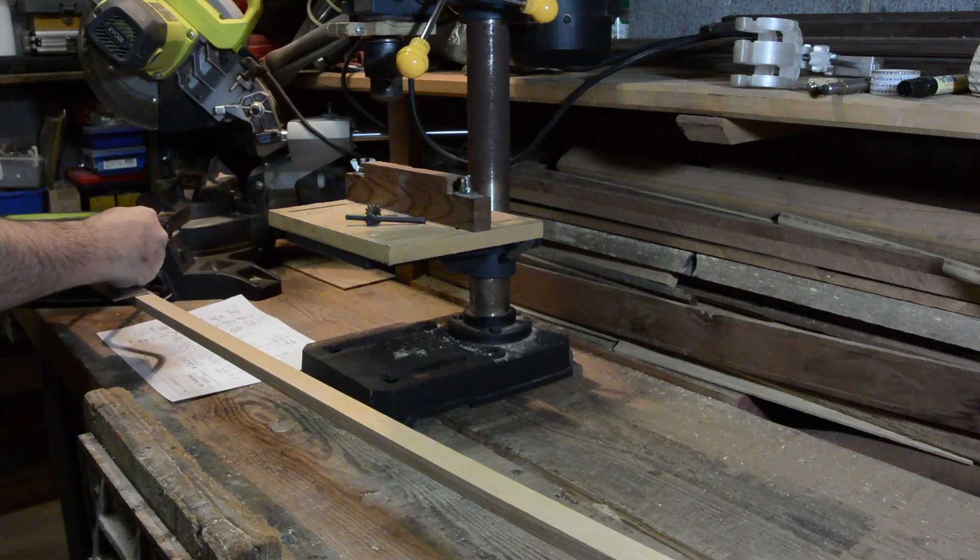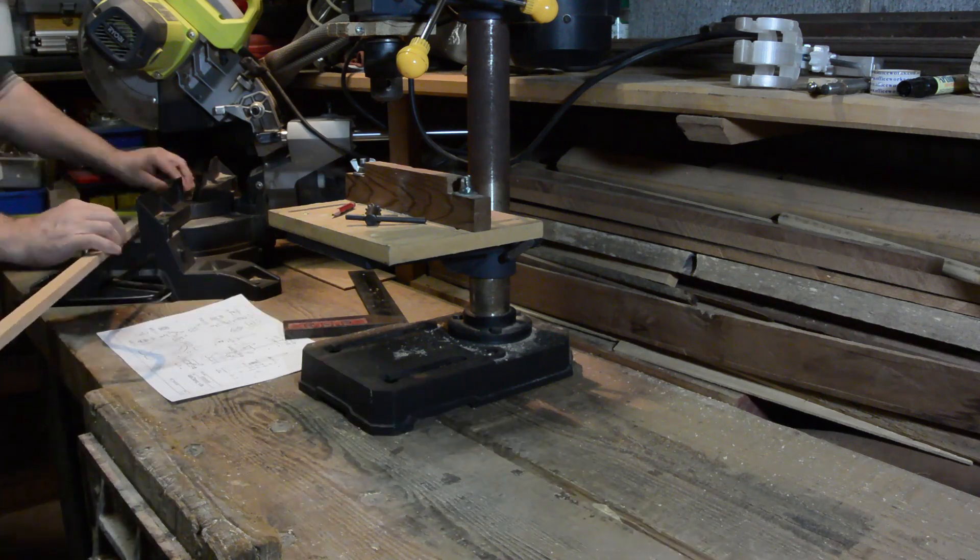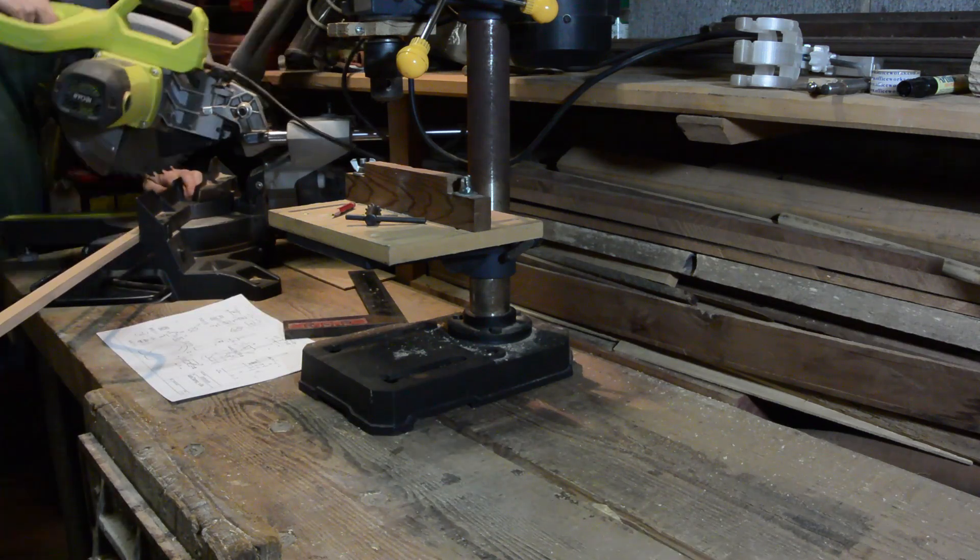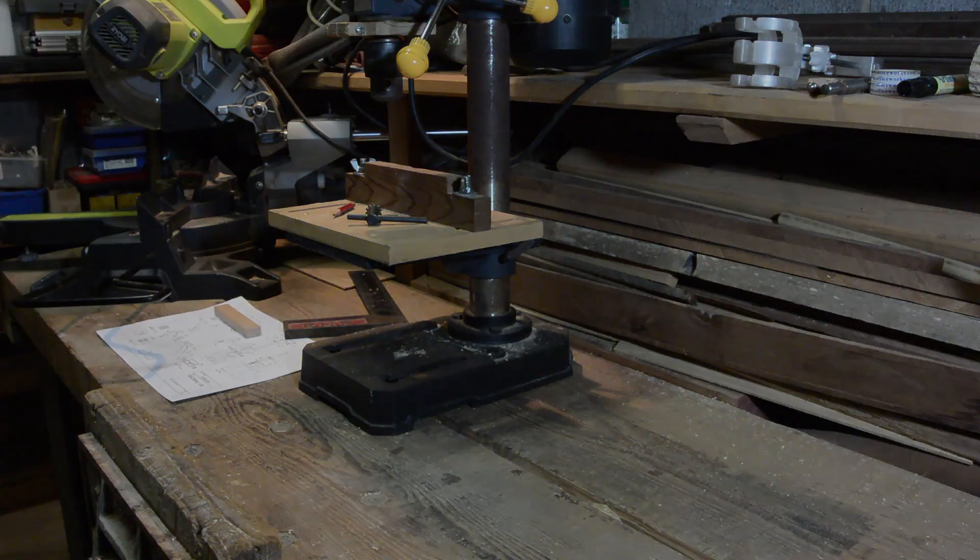The construction of the wooden lab clamp starts with cutting the various pieces of timber required to size. I have a cross cut saw, which makes things a little easier, but a hand saw would obviously do the job if you don't have access to power tools.